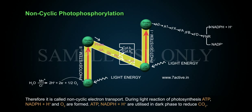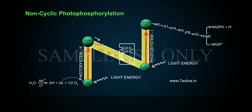During light reaction of photosynthesis, ATP, NADPH + H+, and O2 are formed. ATP, NADPH plus H+ are utilized in dark phase to reduce CO2. Hence, they are known as assimilatory power or reducing power.